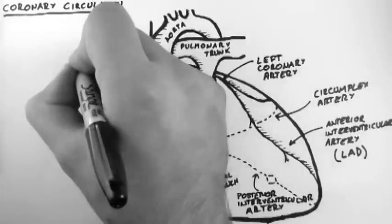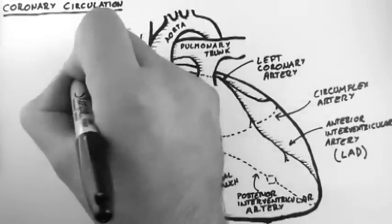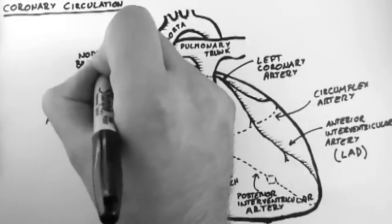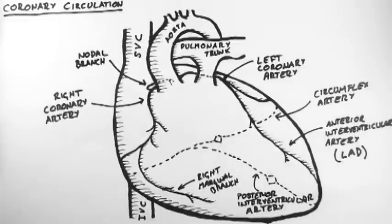Now this one last branch up here is only a very small branch, but it's very important, and it's called the nodal branch. And it's named the nodal branch because it supplies the sinoatrial node, which is the major pacemaker for the heart.